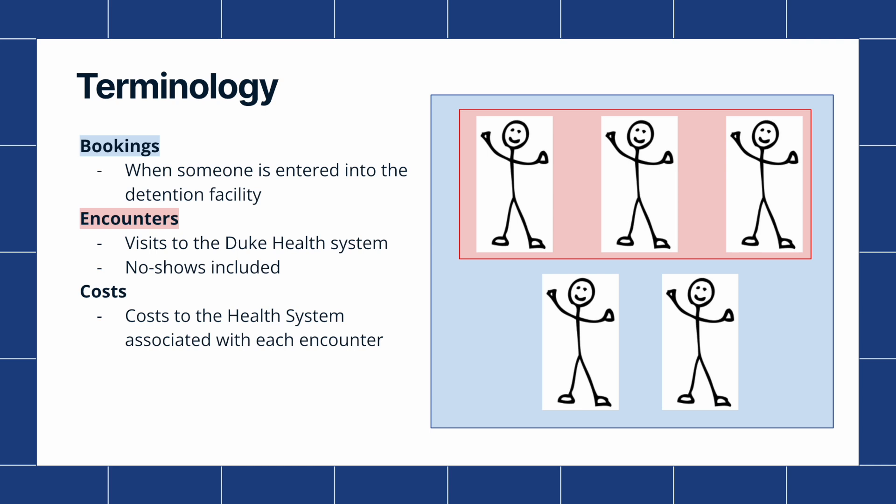For our project, bookings are when someone is entered into the detention facility in Durham County. Encounters are visits to the Duke Health System, which include checkups, visits to the emergency department, and nurse visits. Cost is any cost to the health system associated with each encounter. On the right, we illustrated the relationship between the terms. Everyone in the encounters data set, which are the people in the red box, are also in the bookings data set, which are the people in the blue box. This is because we started from the detention facility population and merged it with the Duke Health data.